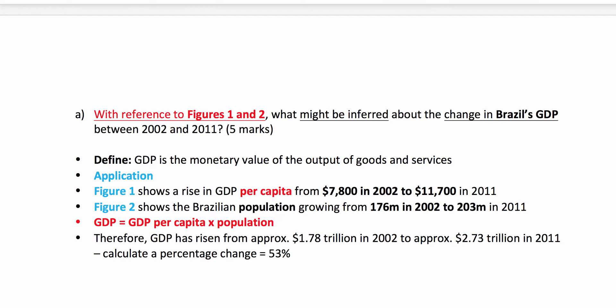Per capita income is rising in Brazil, approximately $7,800 to $11,700. Population is growing, approximately 176 million to 203 million. If you've got slightly different answers from reading off the charts, don't worry — the exam boards have a tolerance there. And GDP, of course, is GDP per capita multiplied by population, so do a quick data calculation.